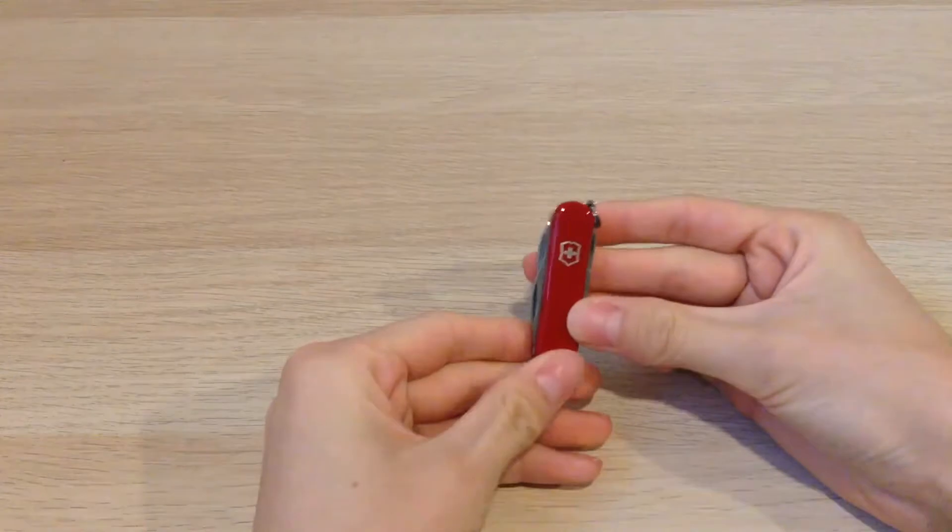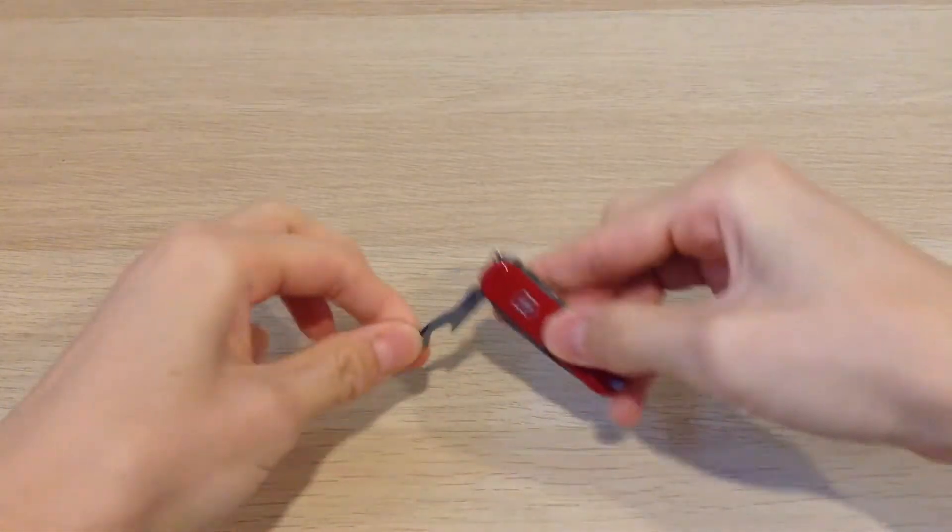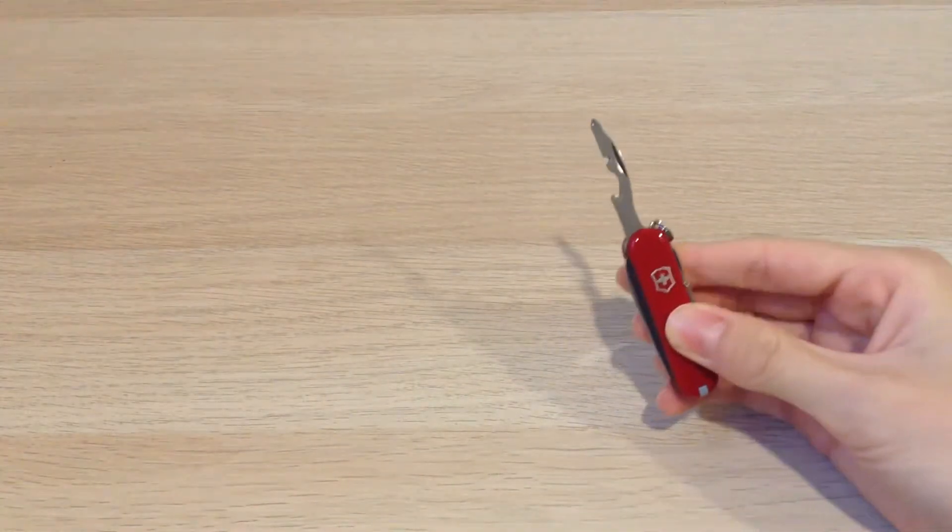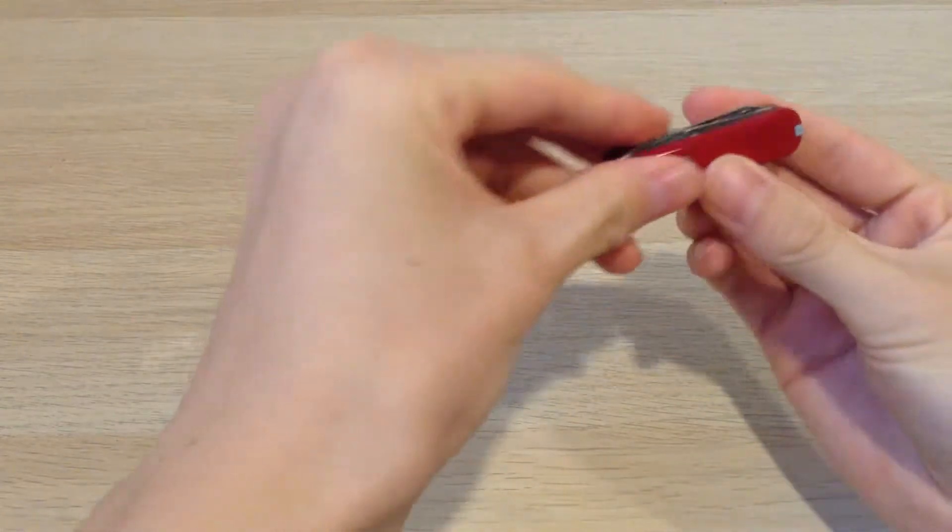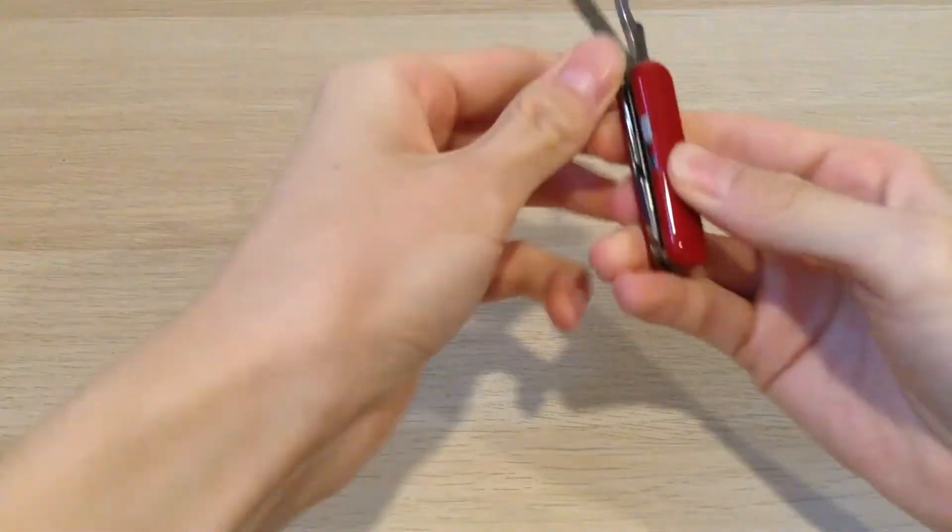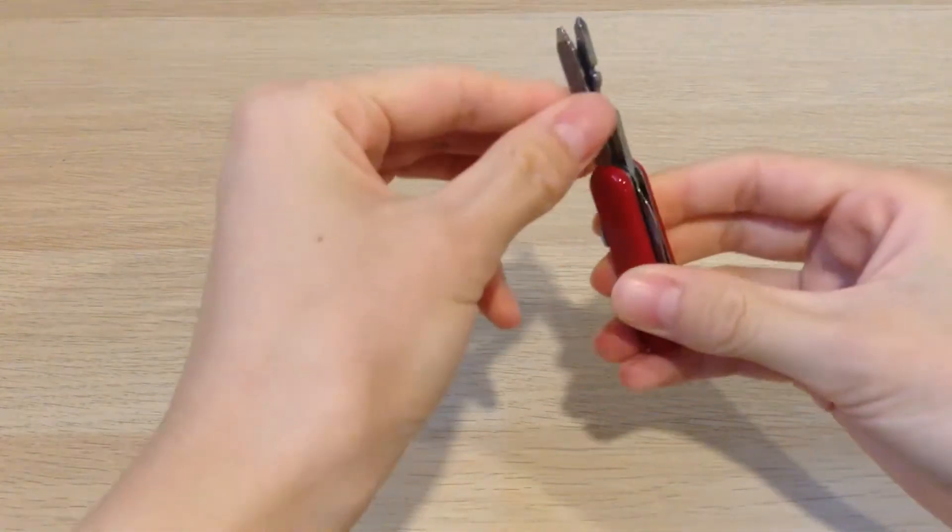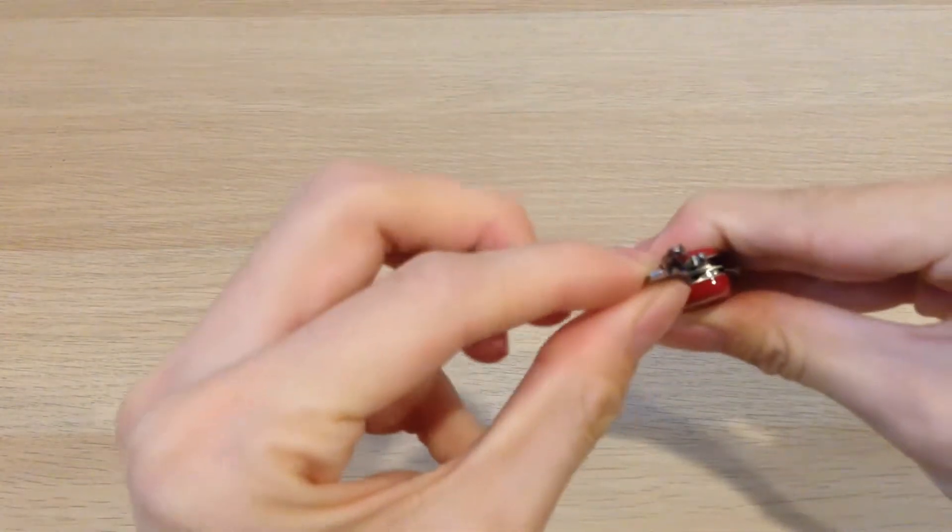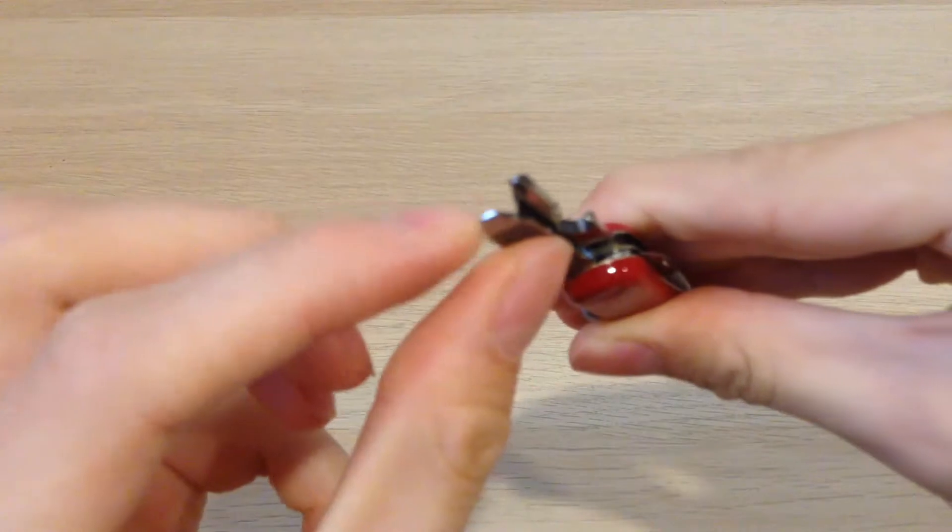Let's take a look at some of the features. Here's the bottle opener. Here's the nail file and a flathead screwdriver over here.